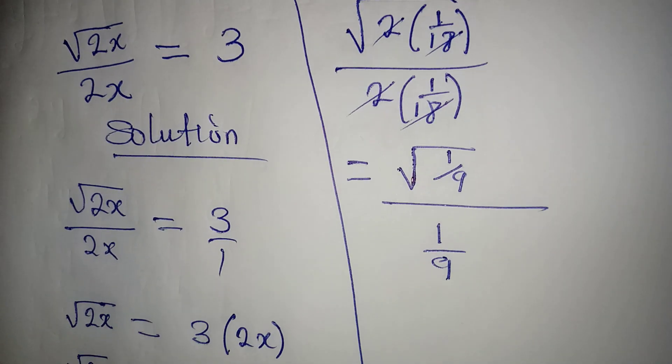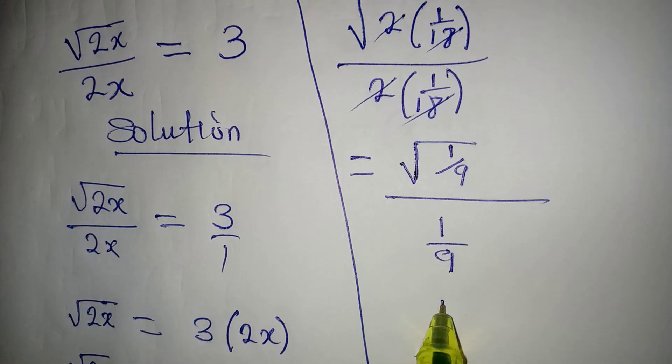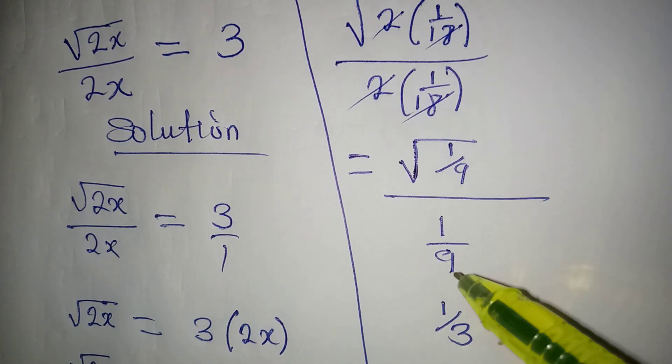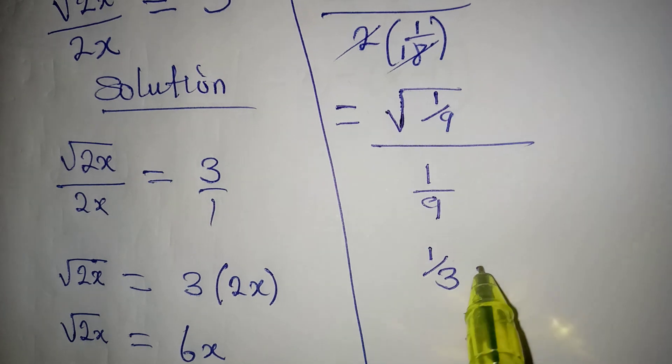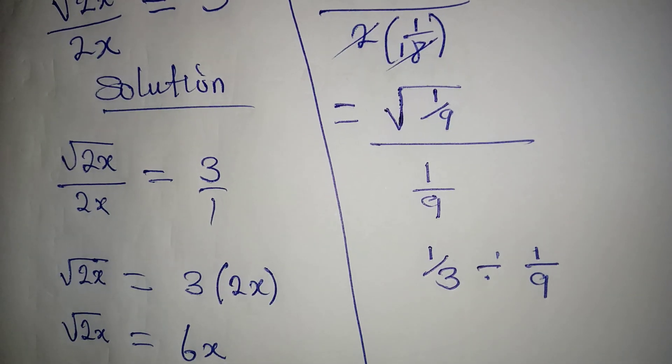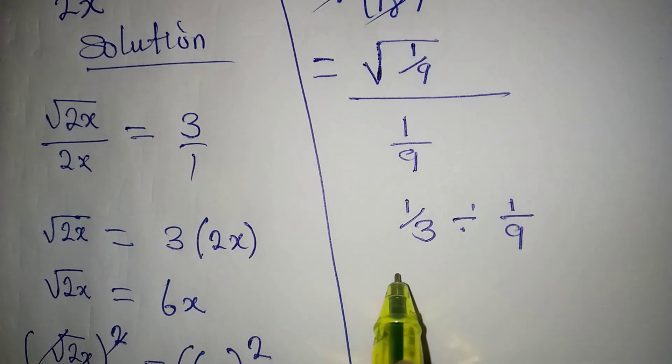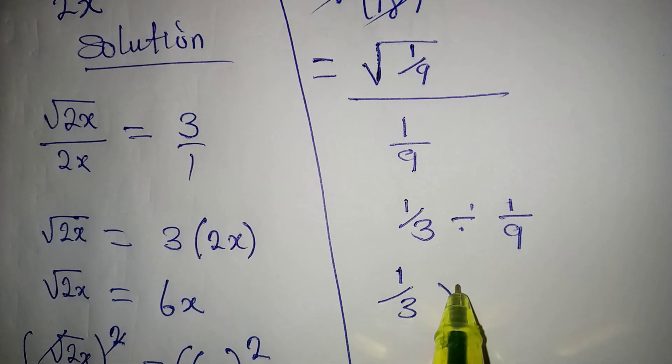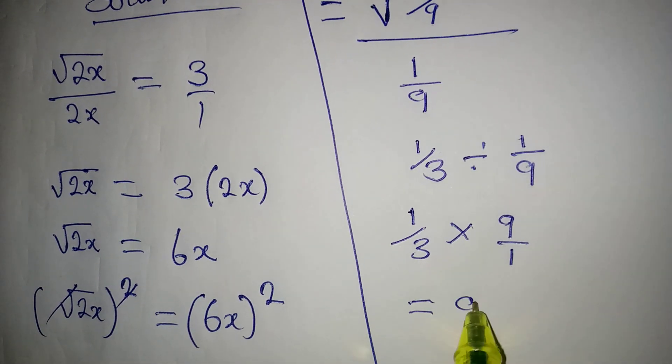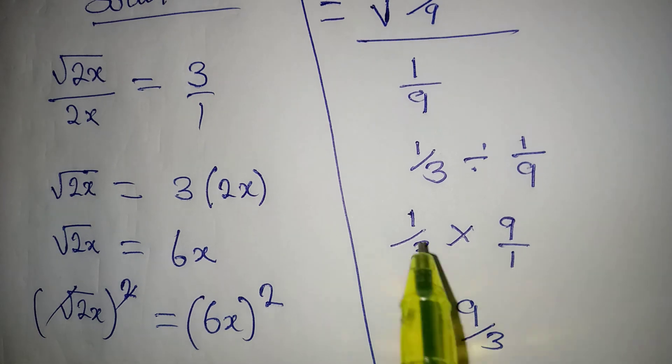From here we have 1 over 3, because square root of 1 is 1 and square root of 9 is 3, then divided by 1 over 9. Turn this to multiplication, so we have 1 over 3 multiplied by 9 over 1.